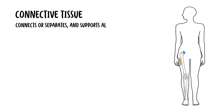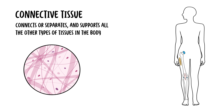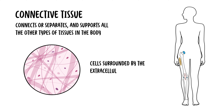Lastly is connective tissue. Connective tissue connects, separates, and supports all other types of tissues in our body. Like all other tissue types, it consists of cells surrounded by a compartment of fluid — the matrix. In this case, we call it the extracellular matrix because it is outside the cell. However, connective tissue differs from other tissue types in that the cells are loosely rather than tightly packed within the extracellular matrix.